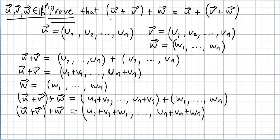Okay, so let us start here. So first, what is u plus v? Well, u plus v, since u is u1, u2, ..., un and v is v1, v2, ..., vn, u plus v will be u1 till un plus v1 to vn.